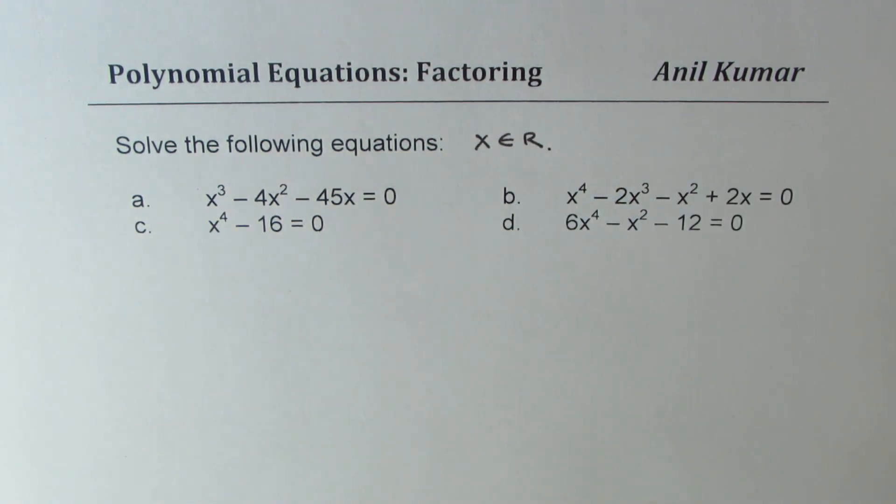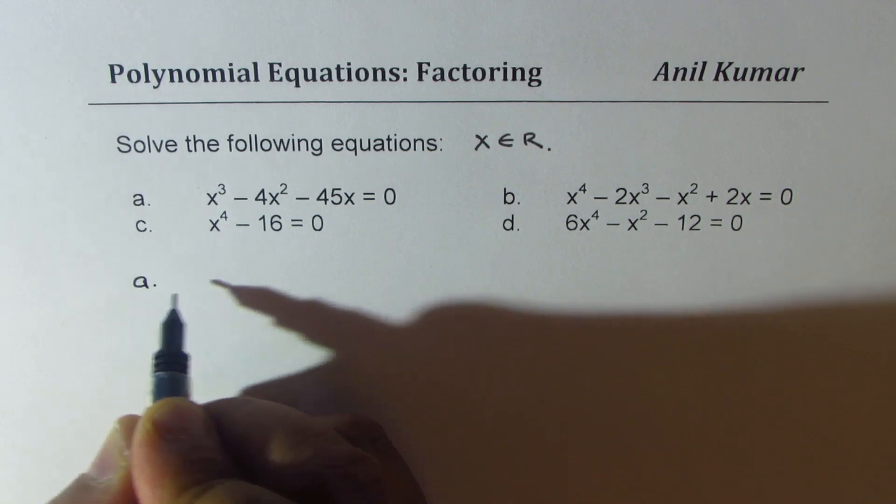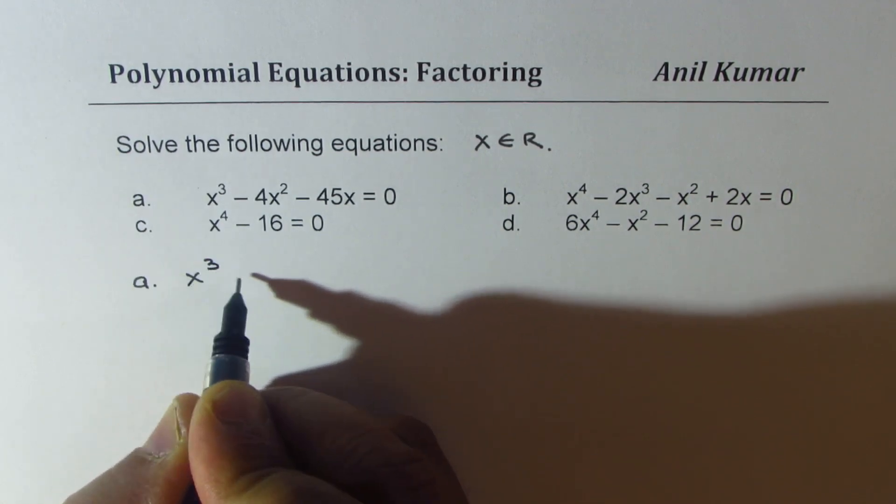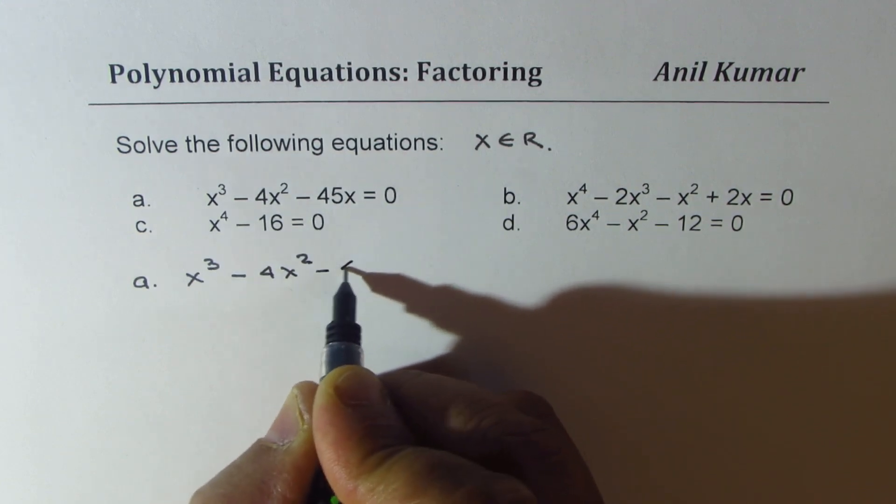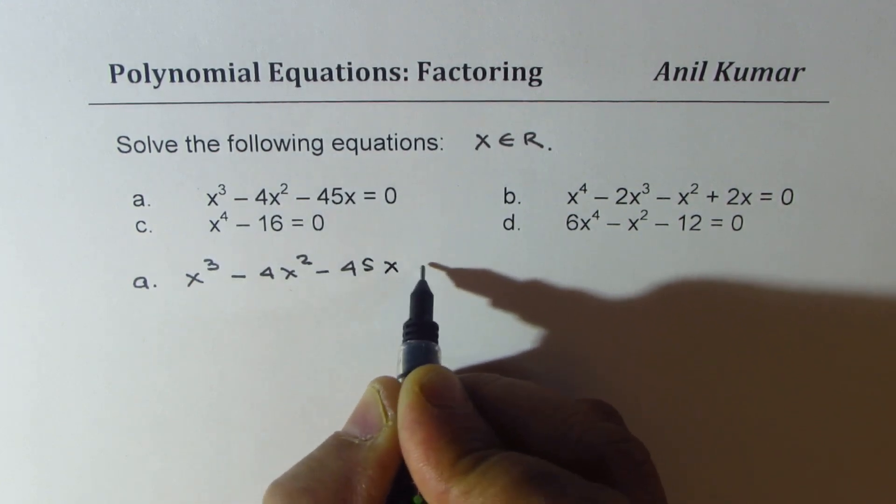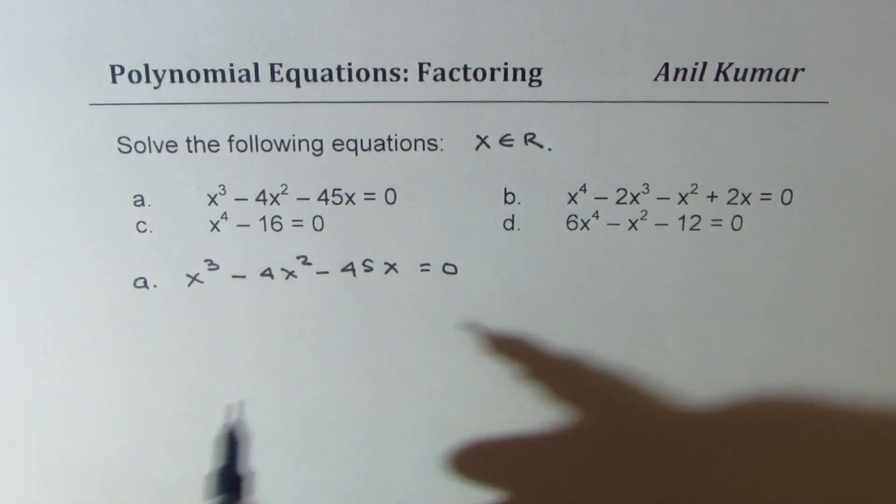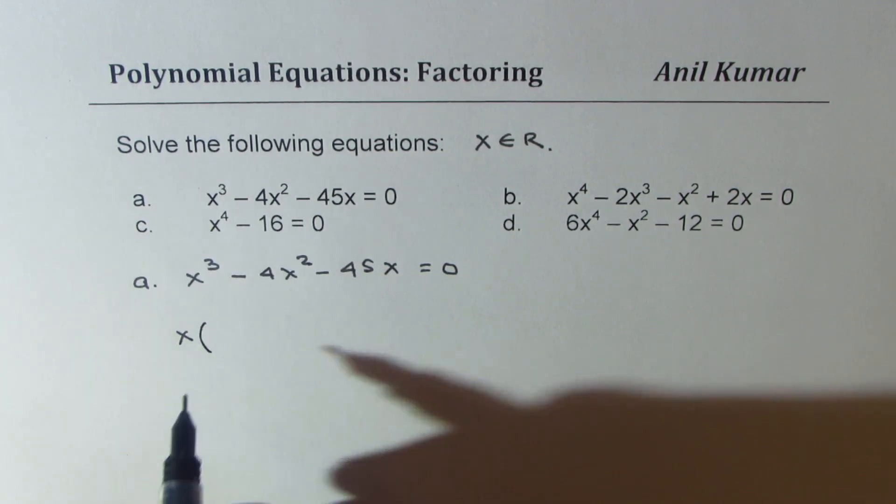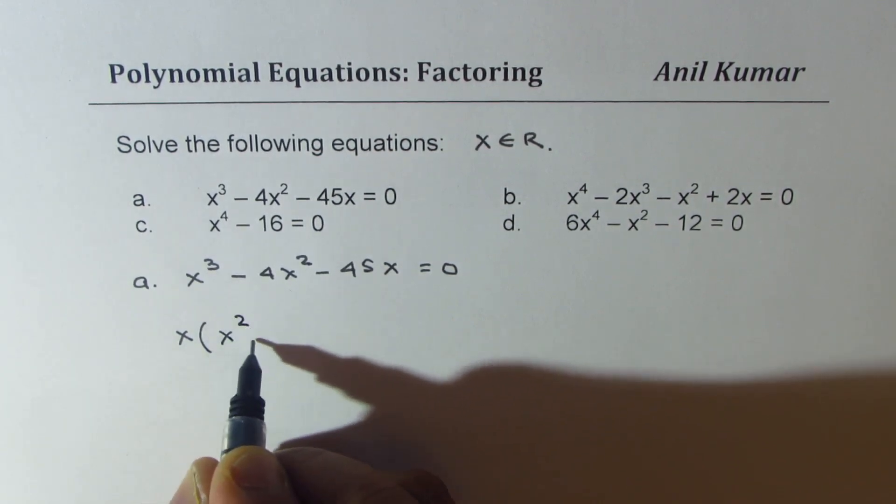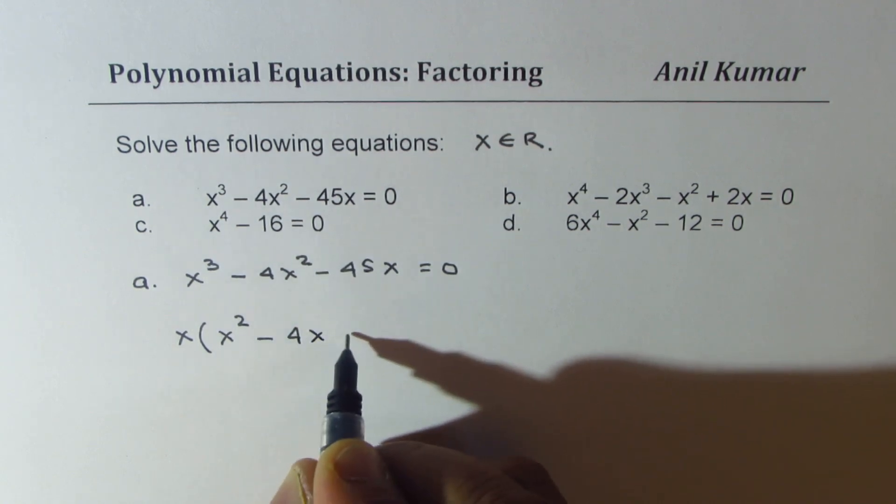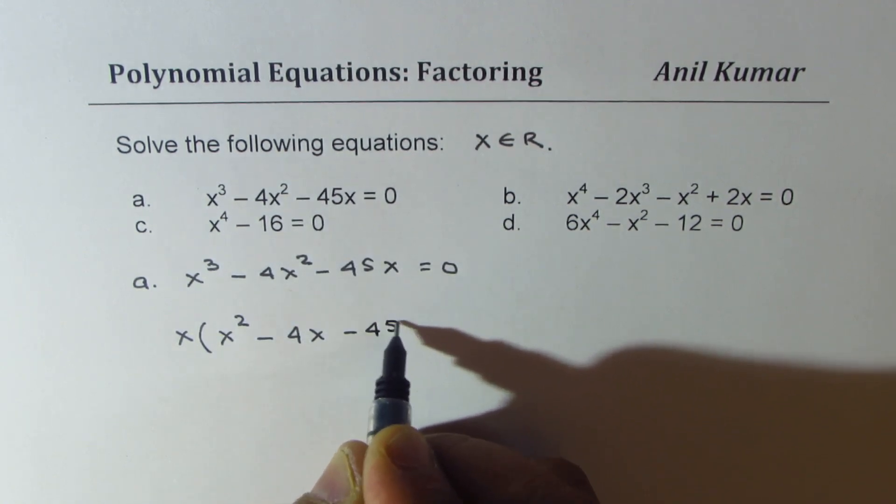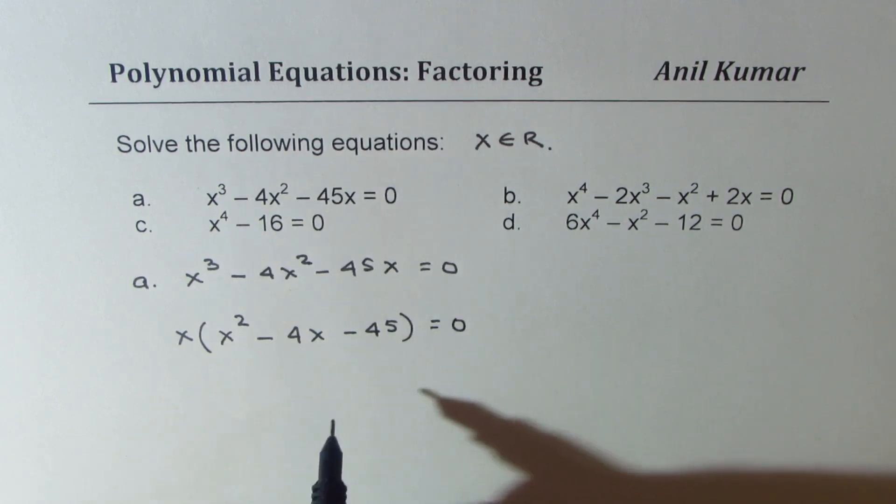Let's begin with the very first one, which is x cubed minus 4x squared minus 45x equal to 0. We can take x common. So if I factor x, I get quadratic equation x squared minus 4x minus 45 equal to 0.